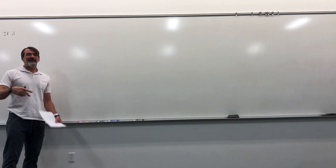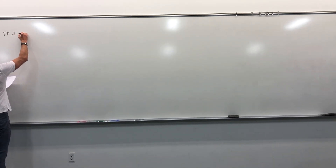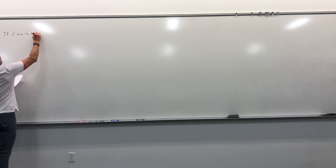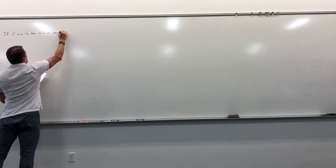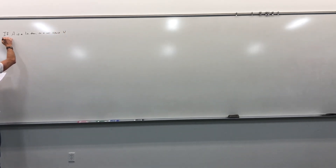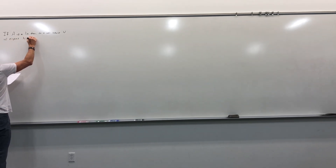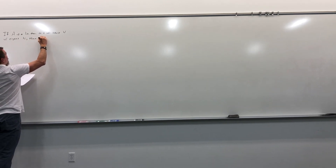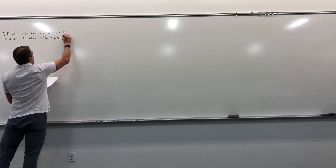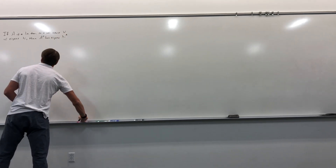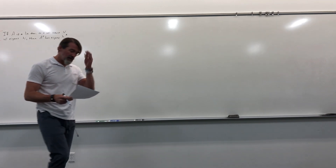I really should just come in and turn it on as soon as I set it up. Anyway, if A is a linear transformation on a vector space V with eigenvalues λᵢ, then A† has eigenvalues λᵢ*. This is a theorem that we actually proved before we left last time, and now I just want to exhibit it in an example.